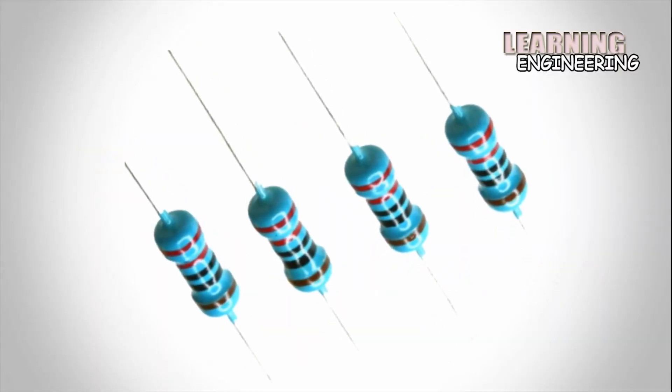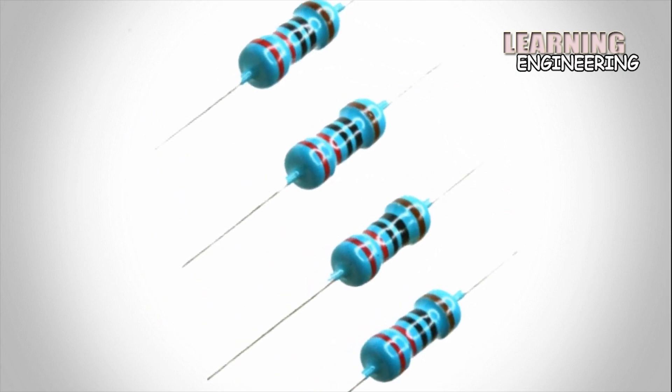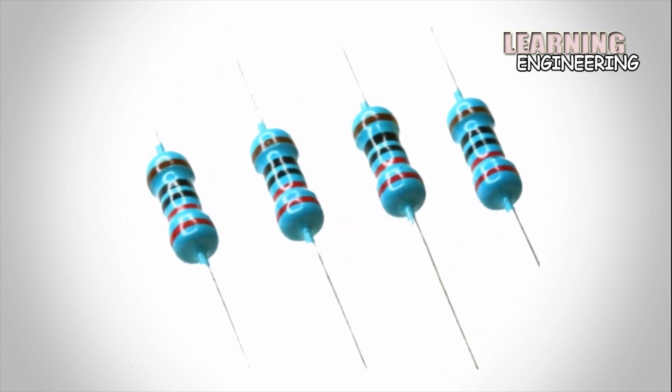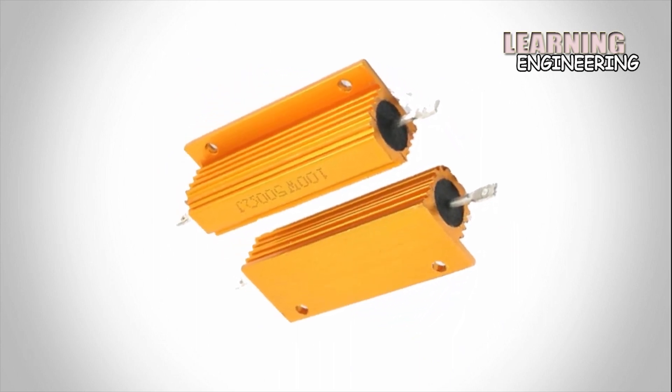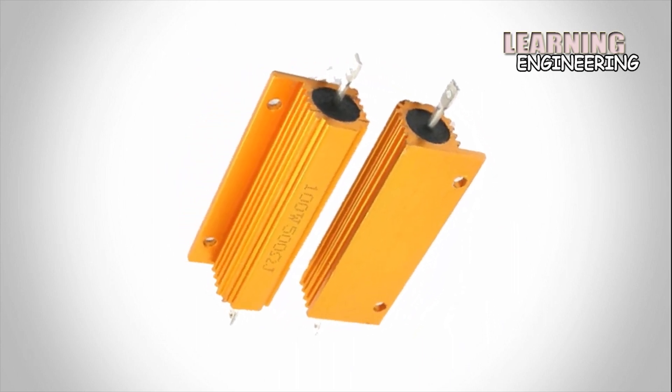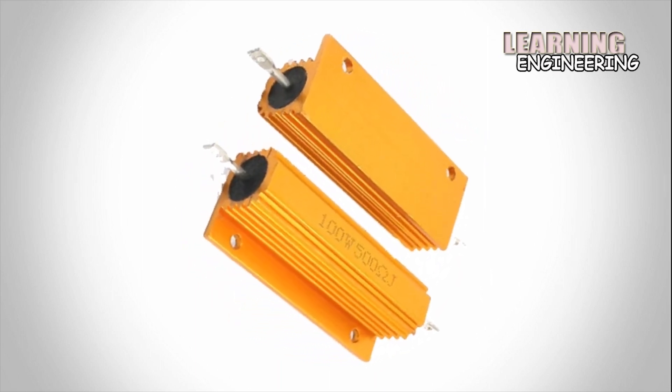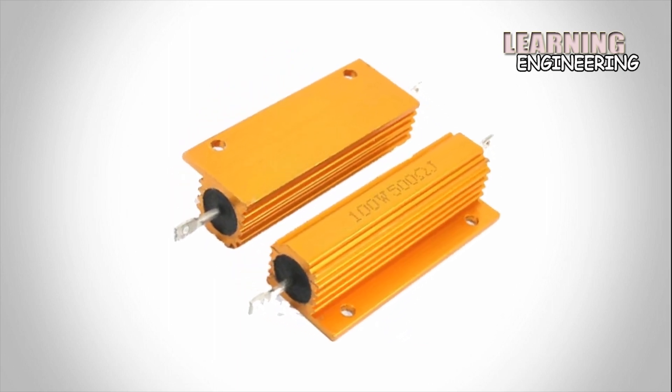A resistor is a passive two-terminal electrical component that implements electrical resistance as a circuit element in electronic circuits. Resistors are used to reduce current flow, adjust signal levels, divide voltages, bias active elements, and terminate transmission lines among other uses.